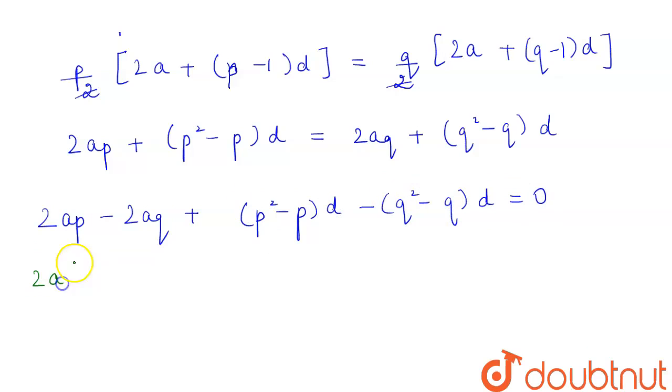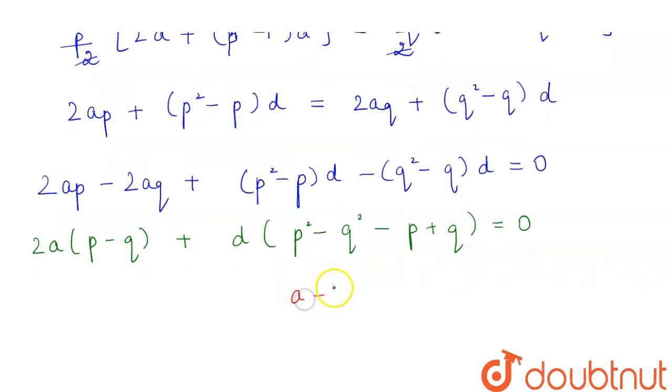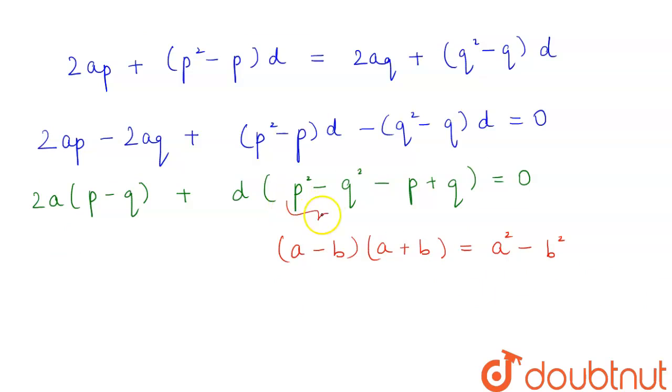From here, if we take 2A to be common, we will get P minus Q plus, if we take D to be common, we will get P square minus Q square minus P plus Q is equal to 0. Now, we have our identity of A minus B into A plus B which is equal to A square minus B square. So we can apply this here. This will be equal to 2A into P minus Q plus D into P plus Q into P minus Q minus P plus Q is equal to 0.